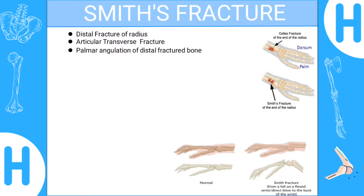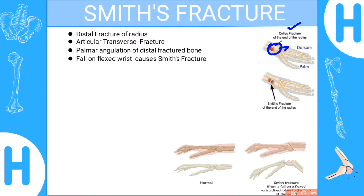In Smith's fracture, the fracture fragment has palmar angulation, meaning the bone is displaced palmarly rather than dorsally. If displaced dorsally, it is a Colles' fracture. As you can see here, in Colles' fracture the bone is displaced towards the dorsum, whereas in Smith's fracture the fragment is displaced towards the palmar surface.